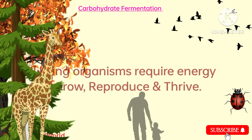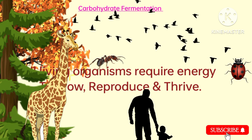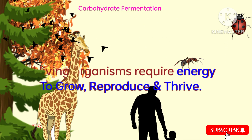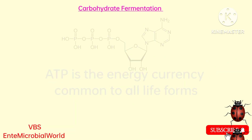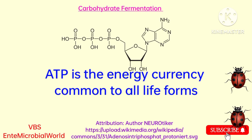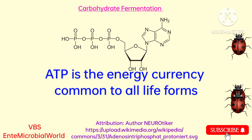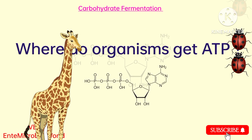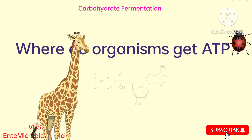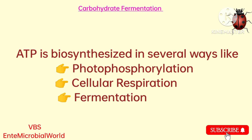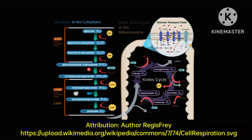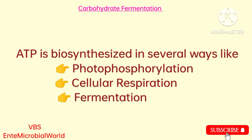As we all know, all living organisms require energy to grow, reproduce and thrive. ATP is the energy currency common to all life forms. The question comes to mind: where do organisms get ATP? ATP is biosynthesized in several ways, like photophosphorylation, cellular respiration, and fermentation.